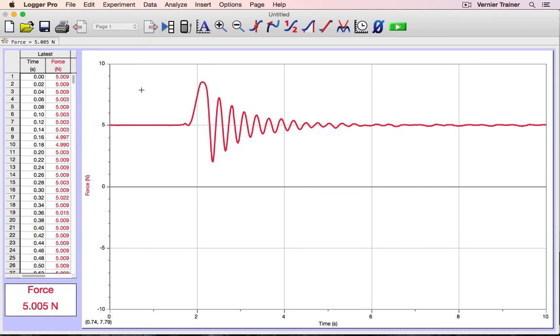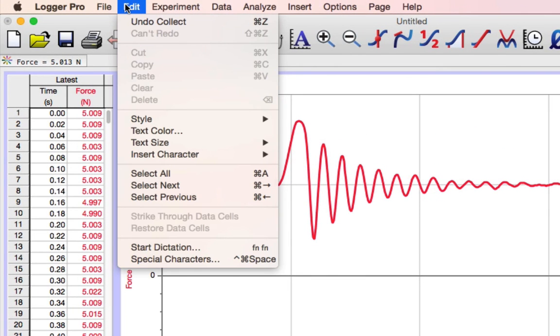If, for whatever reason, you want to quickly discard data you just collected, the fastest way is to select Undo Collect from the Edit menu.